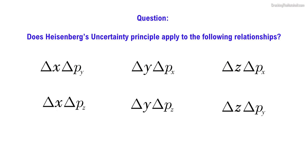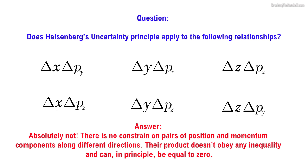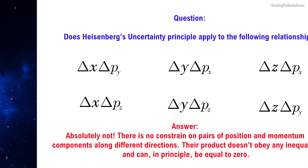Question. Does Heisenberg's uncertainty principle apply to the following relationships? The answer is absolutely not. There is no constraint on pairs of position and momentum components along different directions. Their product doesn't obey any inequality and can, in principle, be equal to zero.